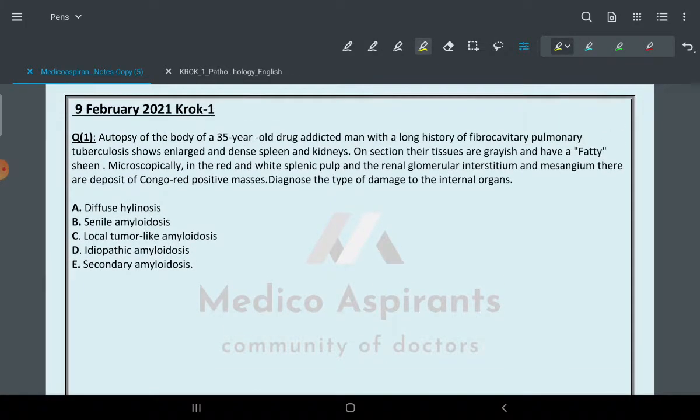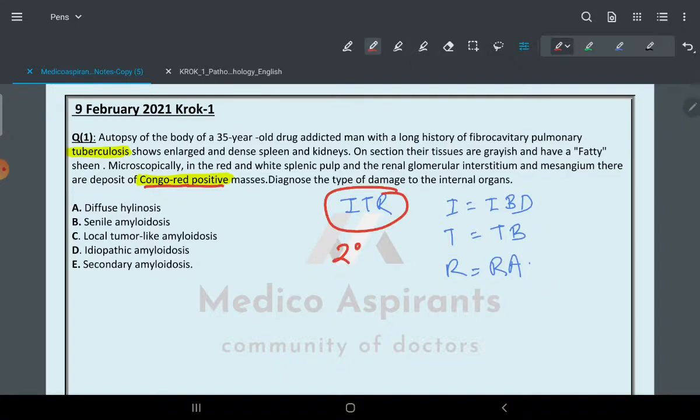If you remember from my class, whenever you see Congo red positive, it is 110% confirmed the answer is amyloidosis. Now to go to the type of amyloidosis, remember my keyword, that trick, the simple ITR. I stands for inflammatory bowel disease, T for TB, and R for rheumatoid arthritis. In this moment, tuberculosis is given. When you see ITR, first confirm amyloid through Congo red positive or apple green color birefringence. Once confirmed, and when it is ITR, that means it is secondary. So the answer is secondary.